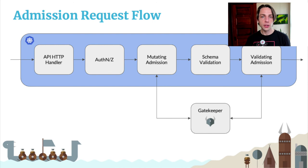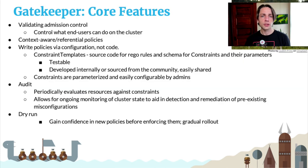This diagram visualizes how an API request flows through the system. Kubernetes provides hooks for mutating and validating a request prior to admitting it into the cluster. Gatekeeper integrates OPA and Rego into the flow to help make these policy decisions. Gatekeeper allows us to write policies as declarative configuration, which can be parameterized to encourage reuse. It supports audit, which periodically evaluates resources against constraints to track compliance across time. With dry run, you can gradually roll out new policies without breaking existing workloads. With context awareness, you can define referential policies that enforce uniqueness of a field across constraints.